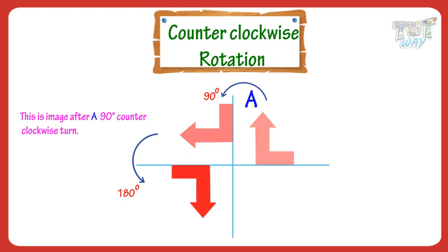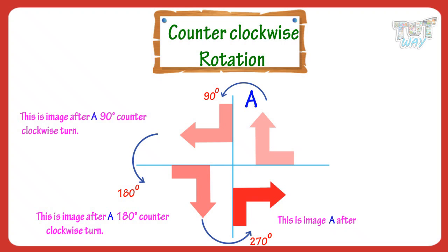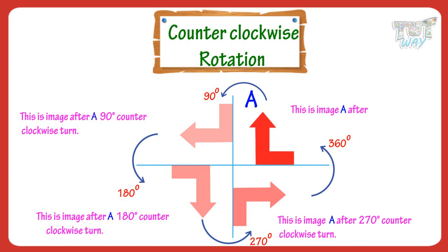This is image A after 180 degree counterclockwise turn or rotation. This is image A after 270 degree counterclockwise turn or rotation. This is image A after a 360 degree counterclockwise turn or rotation. That is, on a 360 degree counterclockwise turn, we get the same image.